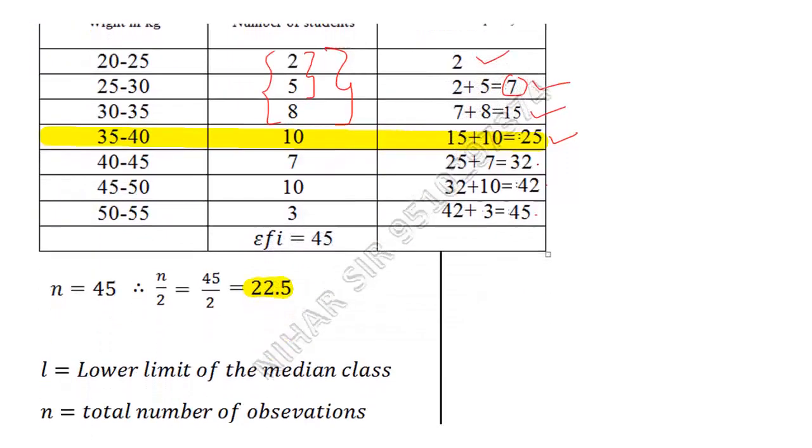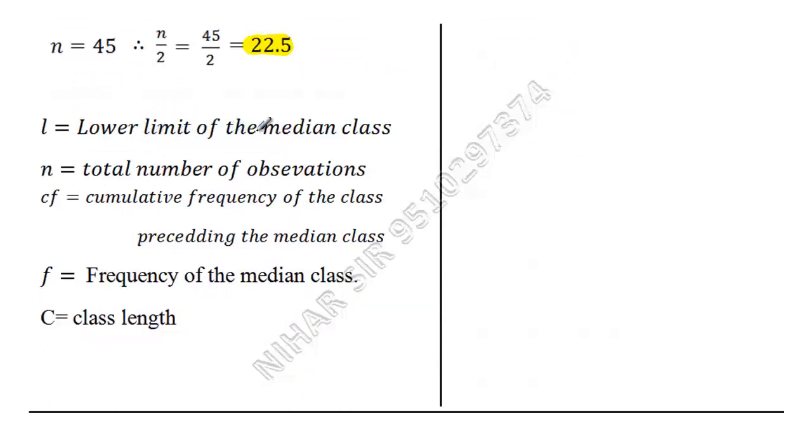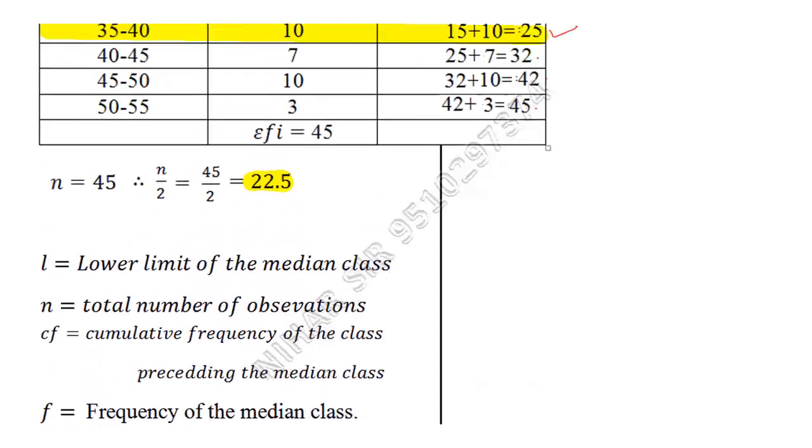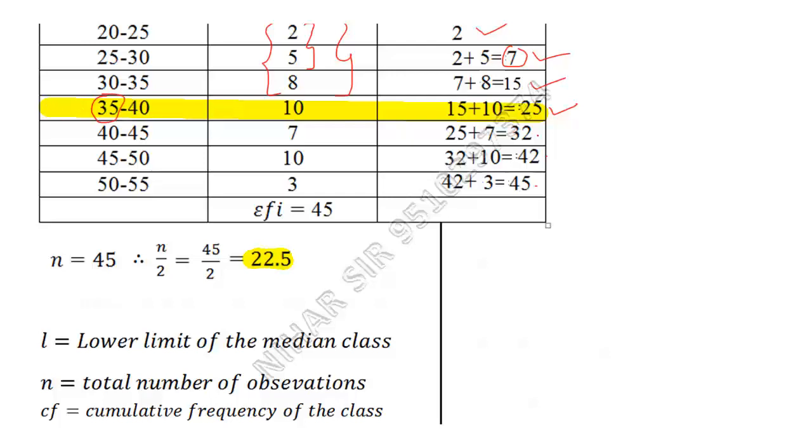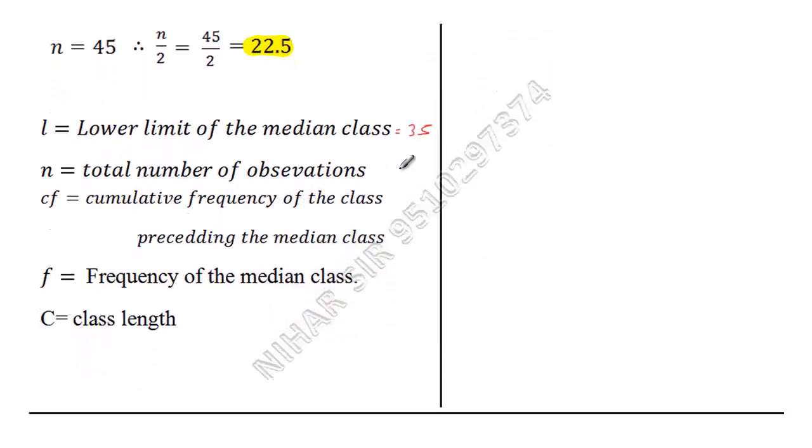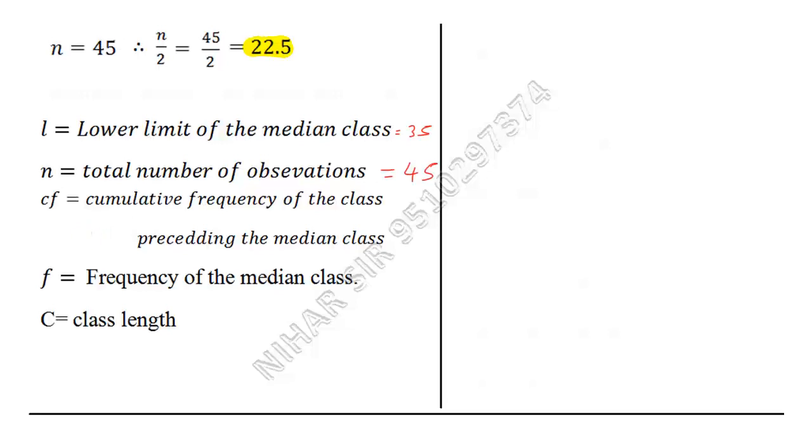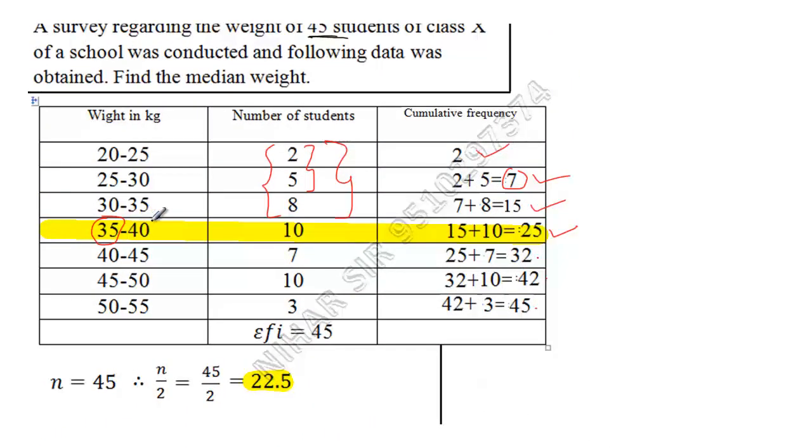Now let us write all the info. So here it will start with lower limit of median class. What is the lower limit of median class? That is 35. So here I will write 35. Total number of observations, 45. cf means cumulative frequency of the class preceding the median class. Do not make mistake over here. Let us see in the table. This is my median class, and cumulative frequency of the class preceding before that is 30 to 35. In that, cumulative frequency is 15. Do not write 25. So that is 15.